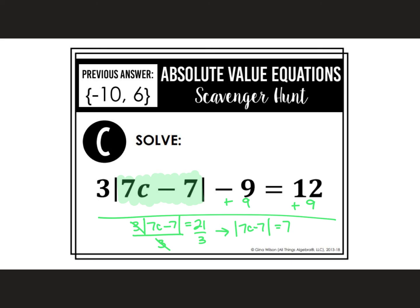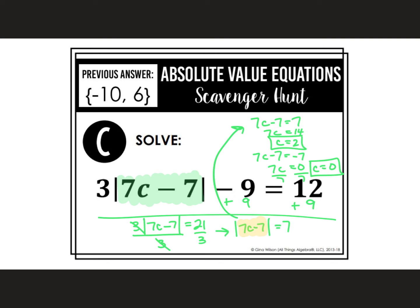Dividing by 3 gives us the absolute value of 7C minus 7 is equal to 7. Now I can break it up into two equations: 7C minus 7 could be 7, or 7C minus 7 could be negative 7. Adding 7 to both sides and dividing by 7 gives C equals 2 for the first equation. For the second, 7C equals 0, so C equals 0. The answer as a set is {0, 2}.